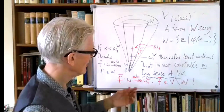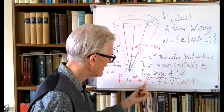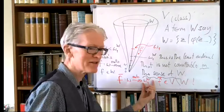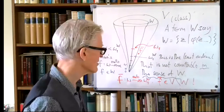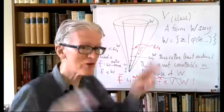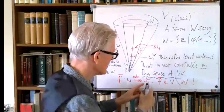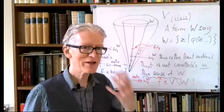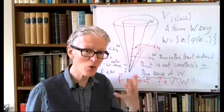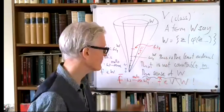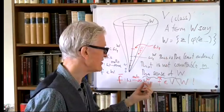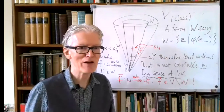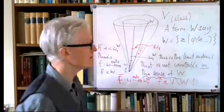This idea of ω₁^W — the first uncountable cardinal in the sense of W, computed in W — is what we get when we take the definition of ω₁ and interpret it inside W. We want to make this a formal, watertight definition of interpretation, and then investigate which concepts are absolute between W and V. This is the task for today.